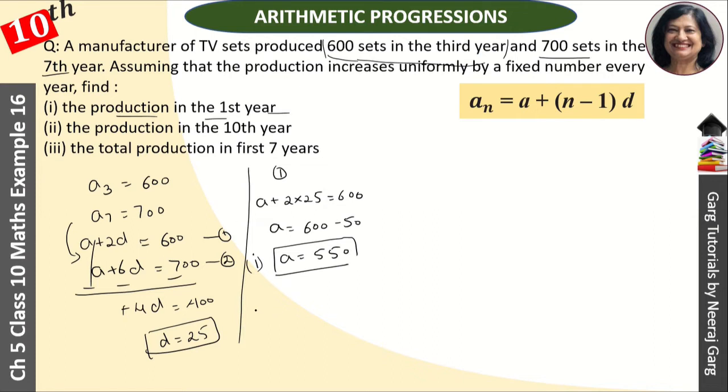Now, what was the second part? The second part is a₁₀, the tenth year. Let's use the formula: a₁₀ = 550 + 9d, where 9 times d is 9 times 25.